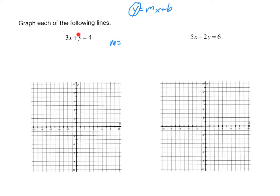Until you have y totally isolated, you cannot read off the slope. So we need to isolate y. To do that, we've got to get rid of that 3x. Subtracting 3x from both sides, you get y on the left-hand side and negative 3x plus 4 on the right-hand side. Now we can read off the slope — and notice, it's not 3, it's negative 3. So m equals negative 3. And we also know this line will cross the y-axis at (0, 4). Once you have a point and the slope, first plot your point, then use your slope to find other points from there.